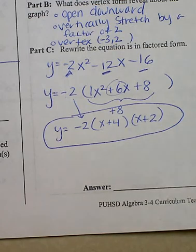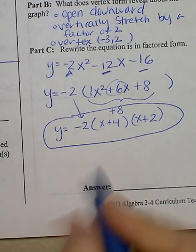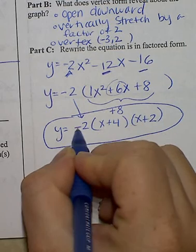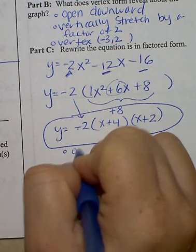Now I know on the next page it's going to ask, what does this reveal? So I'm just going to write it here where I can see it. It reveals, again, two ways to say this. It reveals that you can say it reflects across the x-axis or you can say it opens downward.